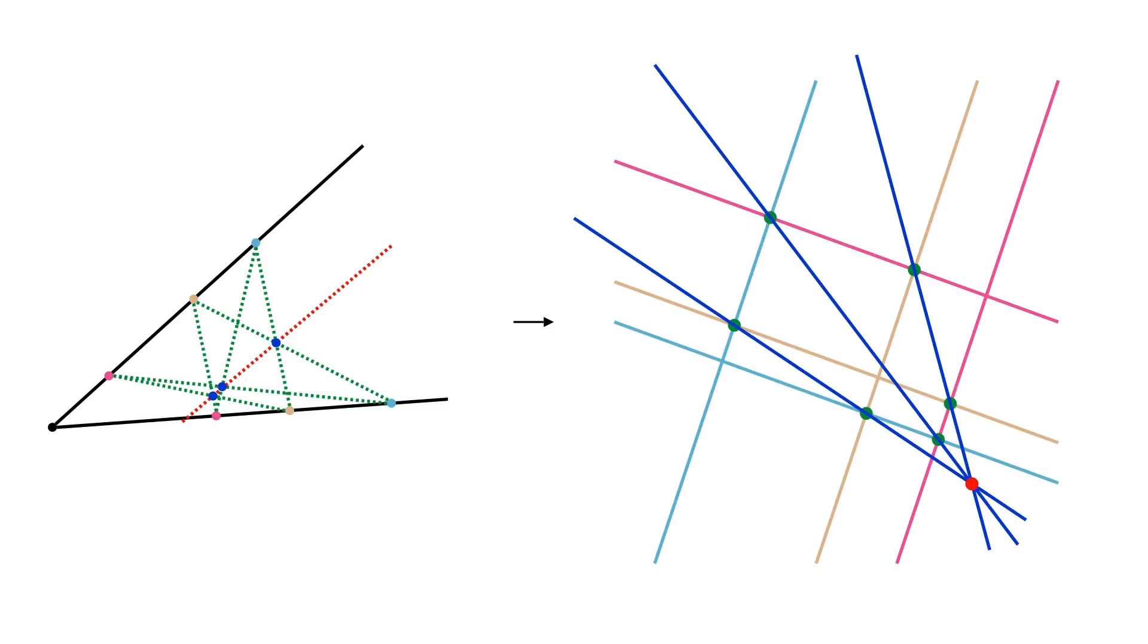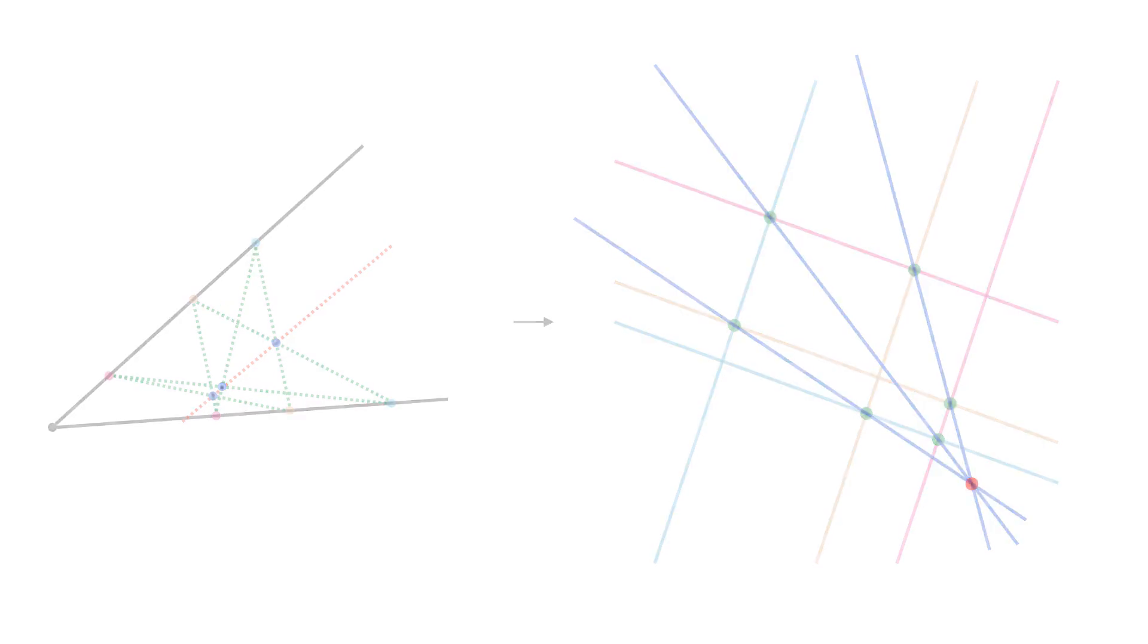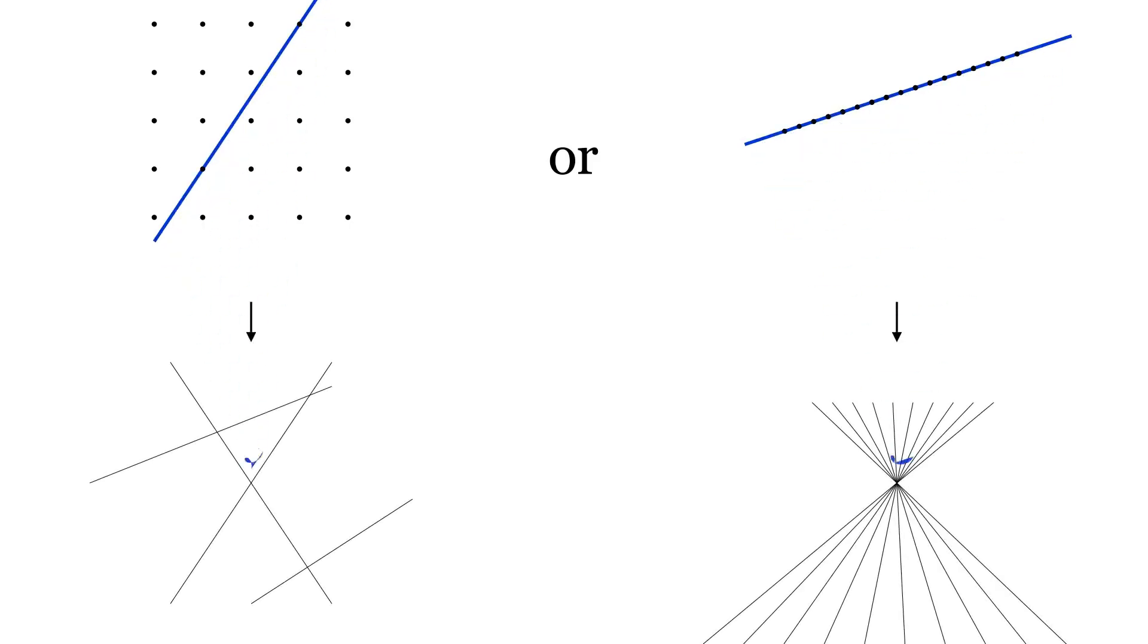Let's now consider one last example of how duality helps in proving a classical result, this time of a more combinatorial nature. The Sylvester-Gallai theorem states that, given a finite set of points in a plane, there is always a line that passes through exactly two points, or otherwise, all those points are on one line. We give a sketch of a proof and encourage you to complete the missing details. As you might have guessed, we are going to perform a polar transformation and deal with the dual version of the theorem.